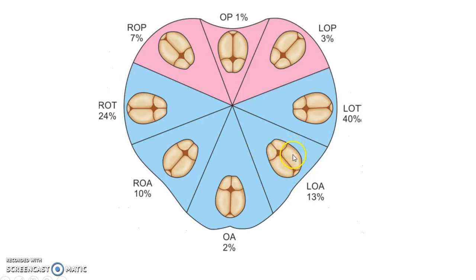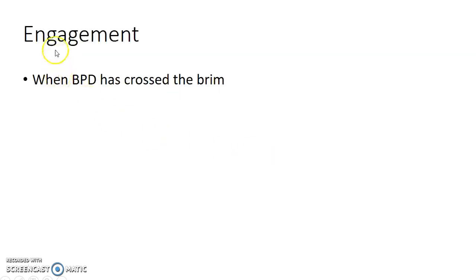This picture again shows the various positions of the fetus in relation to the maternal pelvis. Coming to engagement: the fetal head is considered to be engaged when the biparietal diameter has crossed the brim. Engagement mostly takes place during labor, but in case of primigravidas it could occur in the last few days of pregnancy.